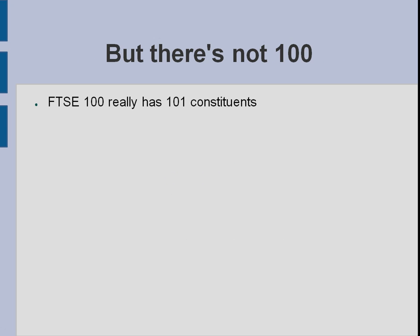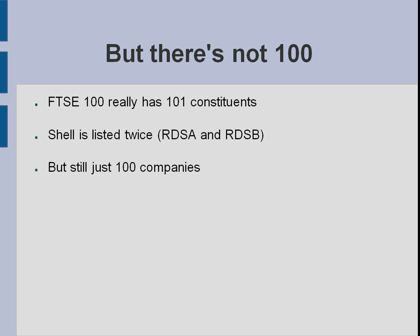Something that confuses people when they look up the document on the Stock Exchange website or go into Wikipedia: you'll see that there's not 100 constituents, which is confusing. There are actually 101 constituents. It's the FTSE 100 but it has 101 things in it. The reason is that Shell is listed twice — you've got Royal Dutch Shell A and Royal Dutch Shell B shares, both of which are included in the FTSE 100. There are still just 100 companies; Shell is one company. They've just created two different share classes because they're a kind of Dutch/British company.